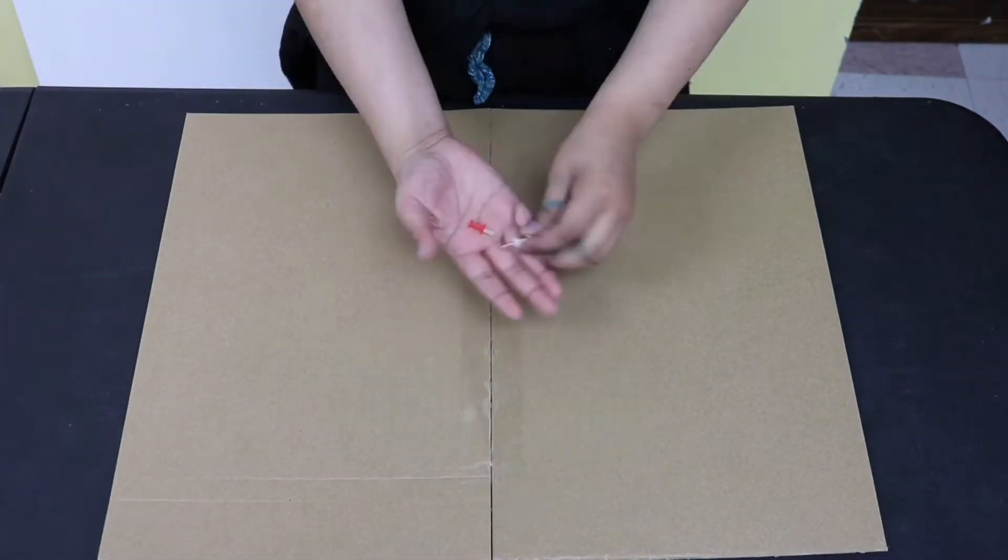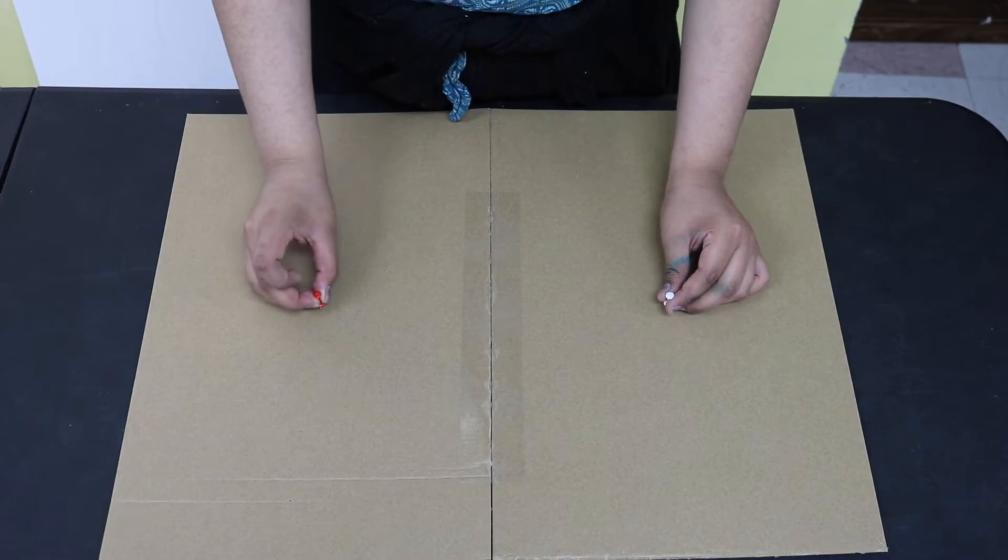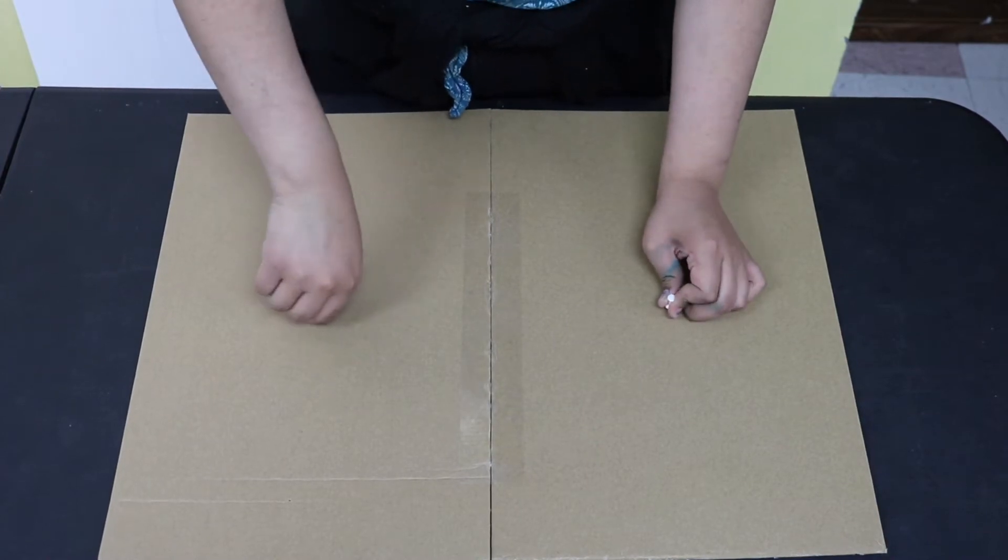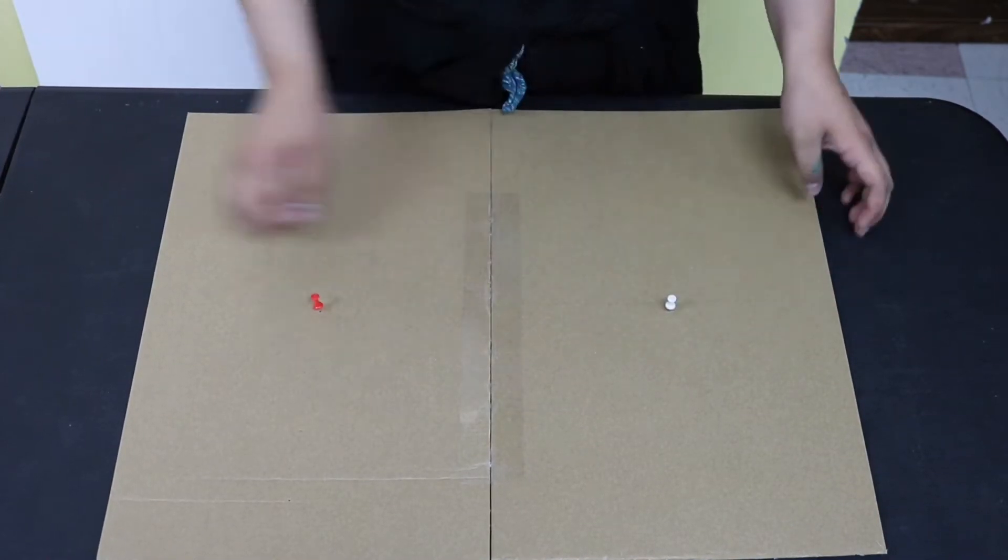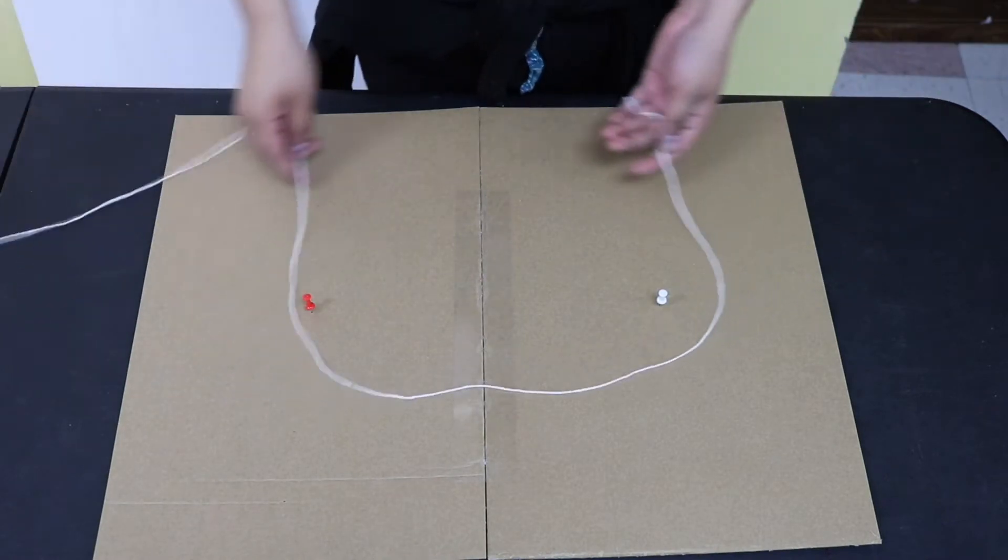Up next you will need two push pins. Place one push pin in one piece of cardboard and the other on the other piece. Make sure they are about equally spaced, but you don't have to be too perfect about this.